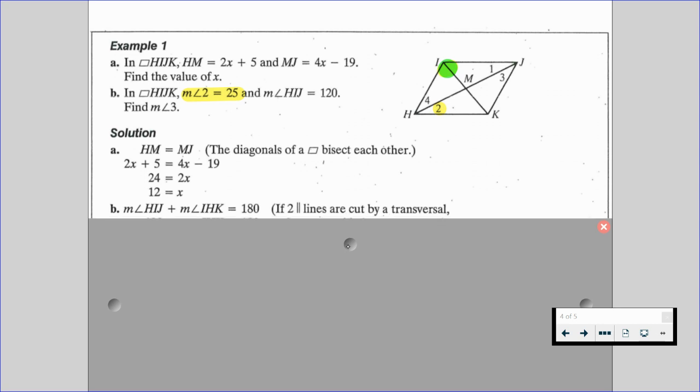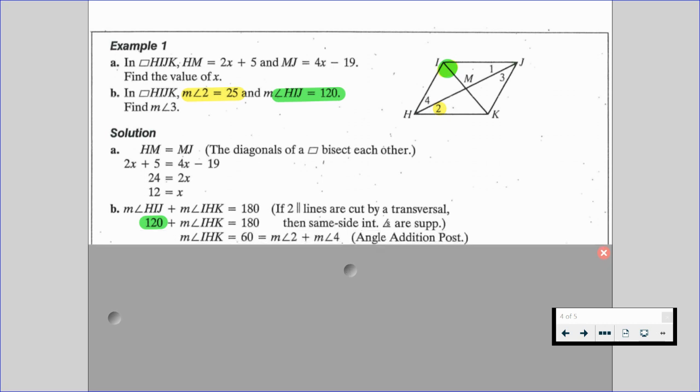So really, when we substitute in some values here, HIJ, that green value, is 120. So we have 120 plus whatever the measure of IHK is, that's going to give us 180. So if we subtract 120 on each side, we find out that the measure of angle IHK is 60 degrees.